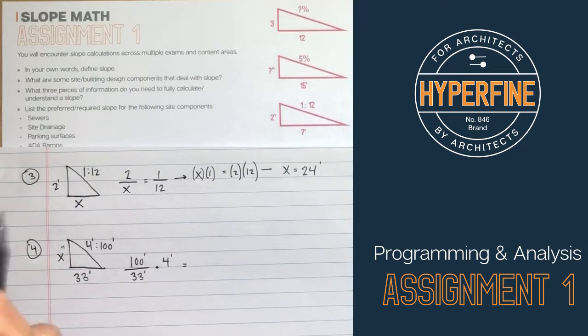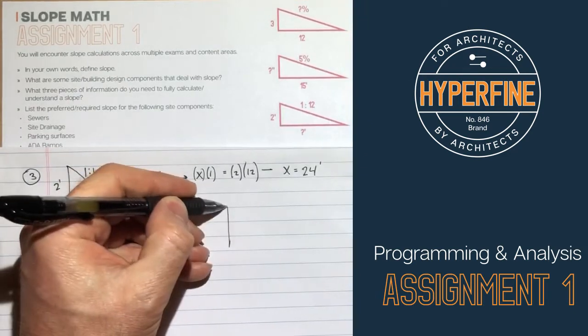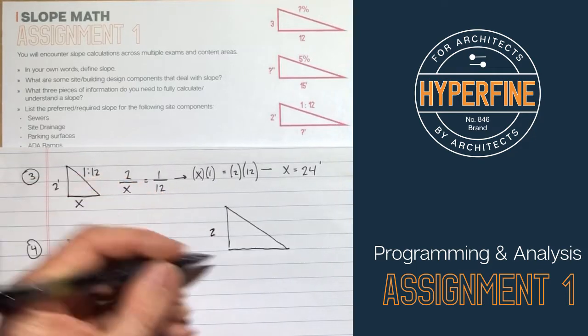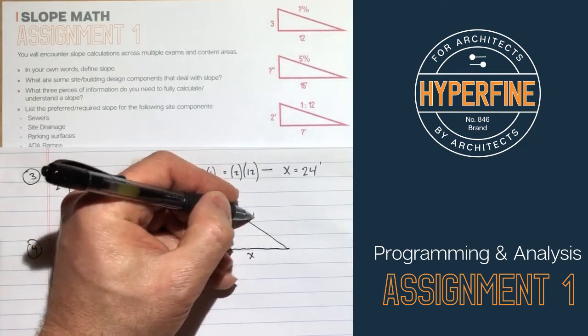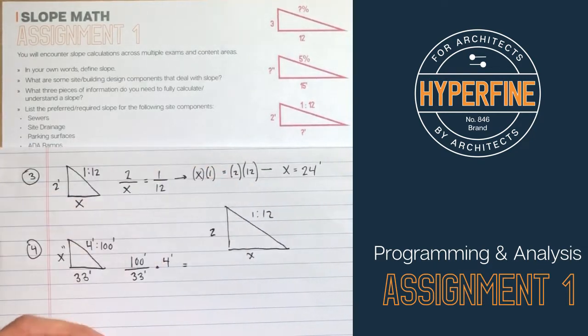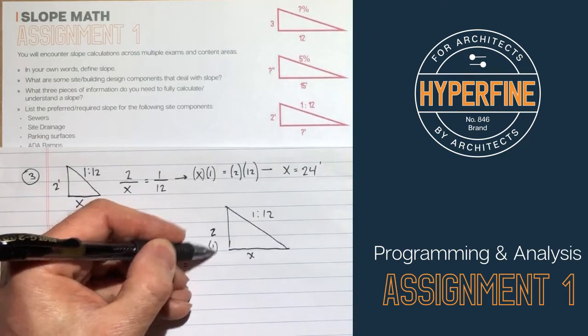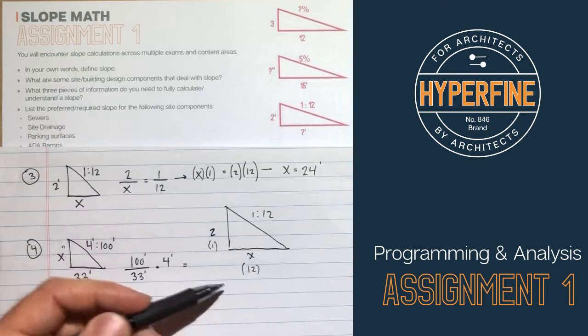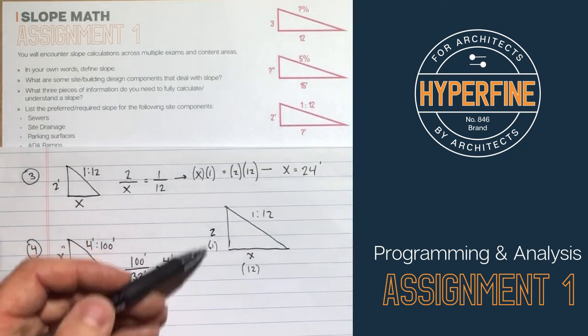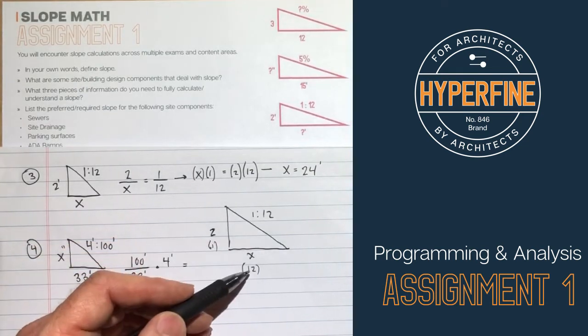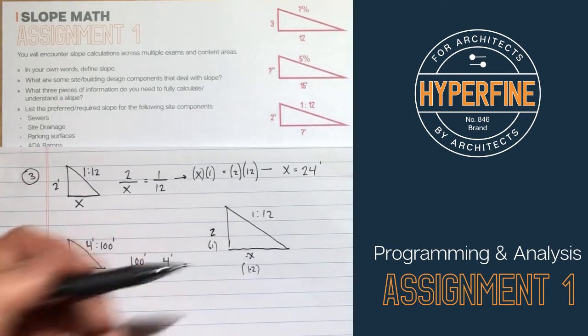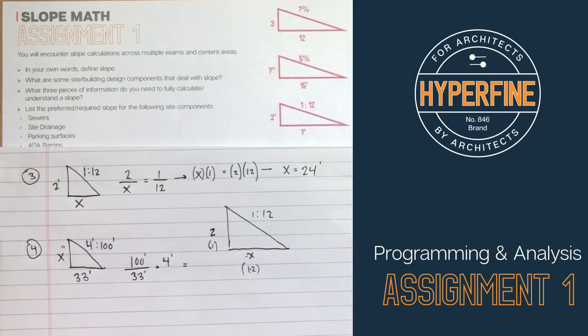Maybe an easier way of looking at that is if this is our slope and our question is 2 and X, and we're given 1 and 12. Let's just put 1 here and put 12 here. So how do we get from 1 to 2? We multiply by 2. So if we want to get from 12 to X, we multiply by 2. So 12 to X, or 12 times 2 is 24.